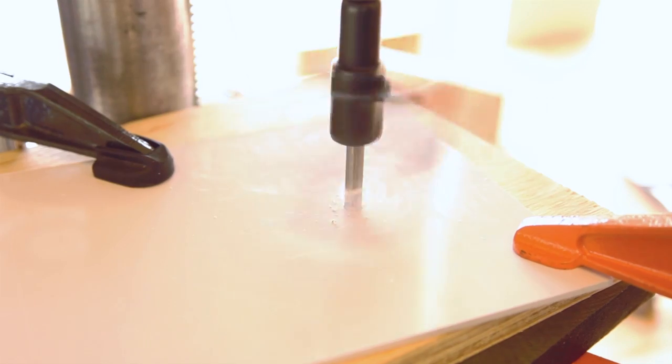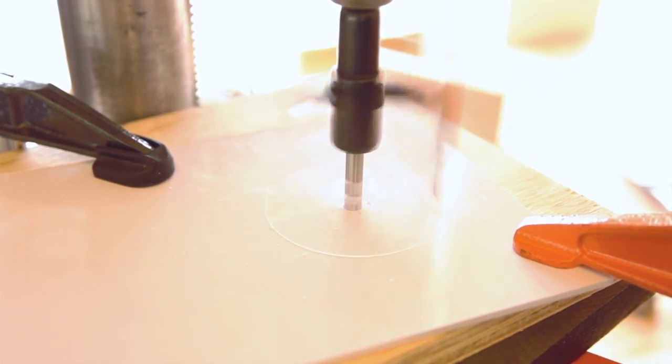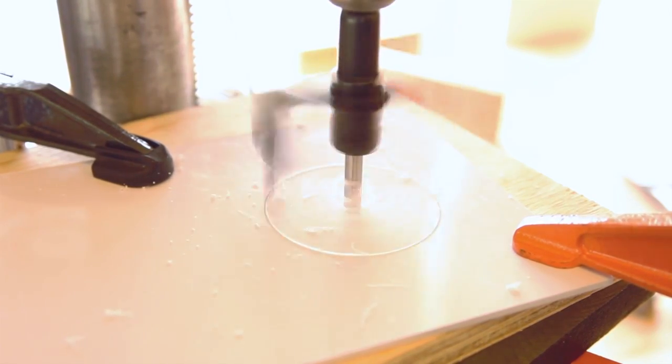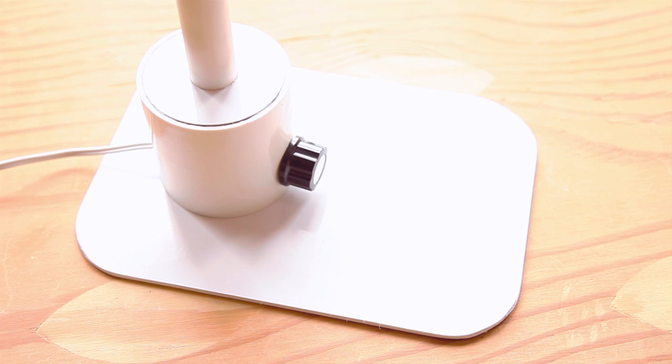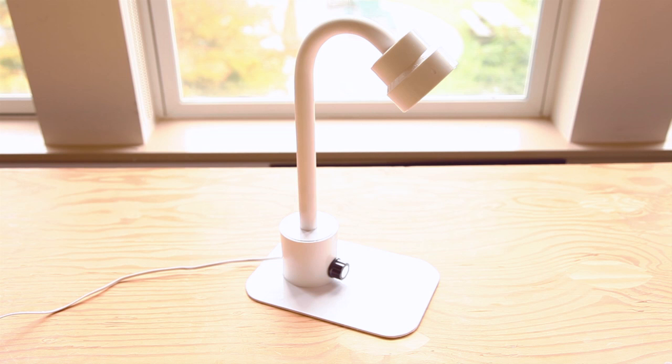You'll need a stable base to keep your lamp from falling over. We've opted for another piece of ABS plastic. Mark where you want the lamp to sit, then use a circle cutting tool to cut out the base. Use epoxy to affix the lamp to the base. If you want to give your lamp extra sheen, you could paint it with polyurethane to give it a glossy finish.